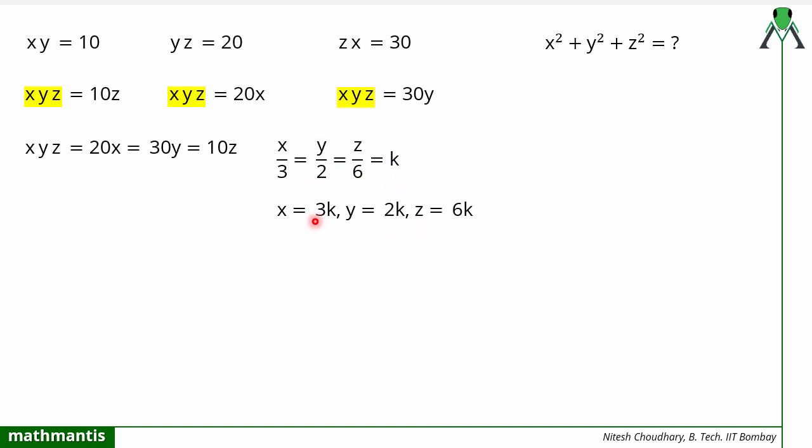Now I will find the value of k. To do this, I will put the value of x, y, and z on the left side, and on the right side I will put the value of x in terms of k. So the equation that will be formed is (3k)(2k)(6k) = 20(3k).